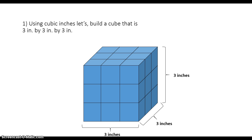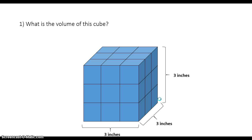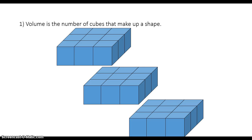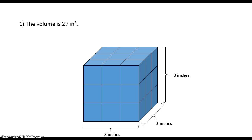You'll see I've got a width of three inches, a length of three inches, and a height of three inches. So, what's the volume of this cube? How many cubes did I use to make this prism? Because the volume is the number of cubes that we use to make up a shape. I had nine, nine, and nine — so all together I had 27 cubic inches, which is the same as multiplying length times width times height. Three times three is nine, and nine times three is 27. So the volume is 27 inches cubed.